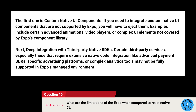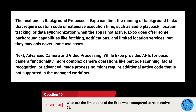Expo can also limit background processes that require custom code or extensive execution time, such as audio playback, location tracking, or data synchronization when the app is not active. Expo does offer some background capabilities like fetching, notifications, and limited location services, but they may not cover all use cases. Another limitation is advanced camera and video processing — while Expo provides APIs for basic camera functionality, more complex operations like barcode scanning, facial recognition, or advanced image processing might require additional native code not supported in the managed workflow.